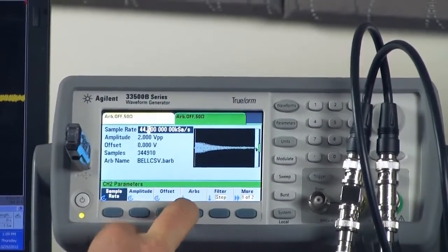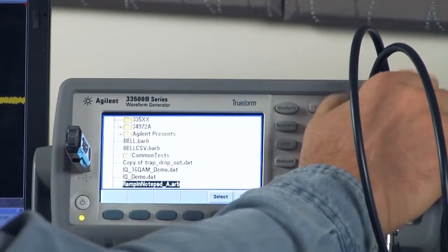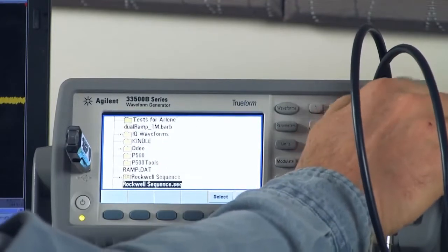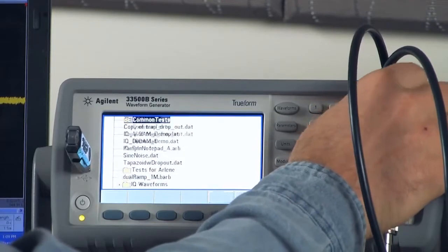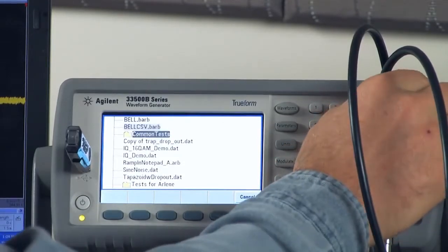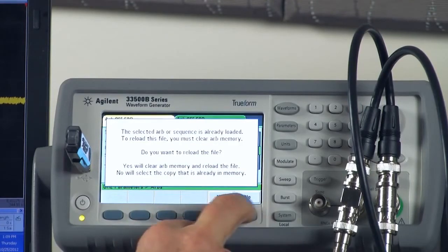Select an ARB, and down here I have the ARBs on my USB stick. The ARB is called bell.csv. I select it and load it.